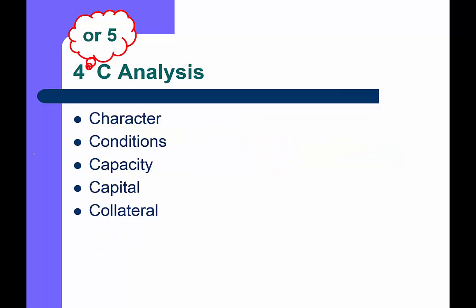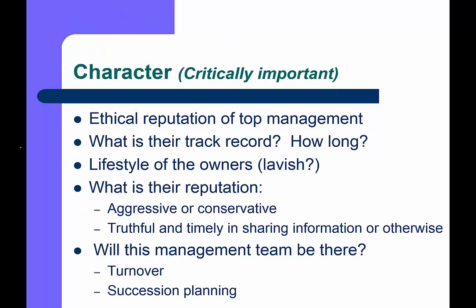Now, the 4C analysis. The first C, and intentionally number one, is character. Banks and investors in general are primarily concerned with the reputation of the people to whom they are lending. Are these people of high ethical reputation? What is their track record? Do they have a reputation for doing what they say? How long have they been in this business?